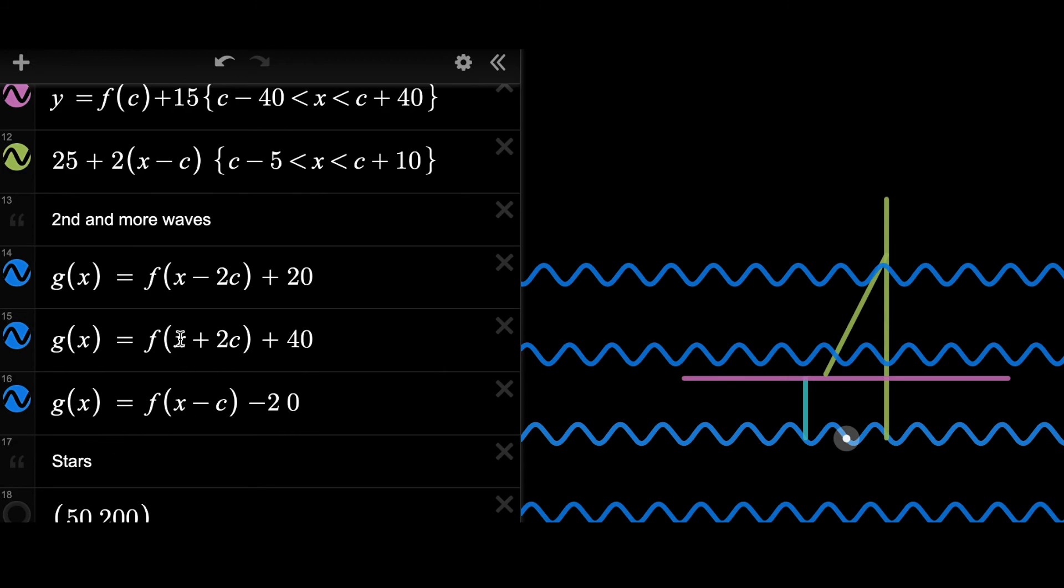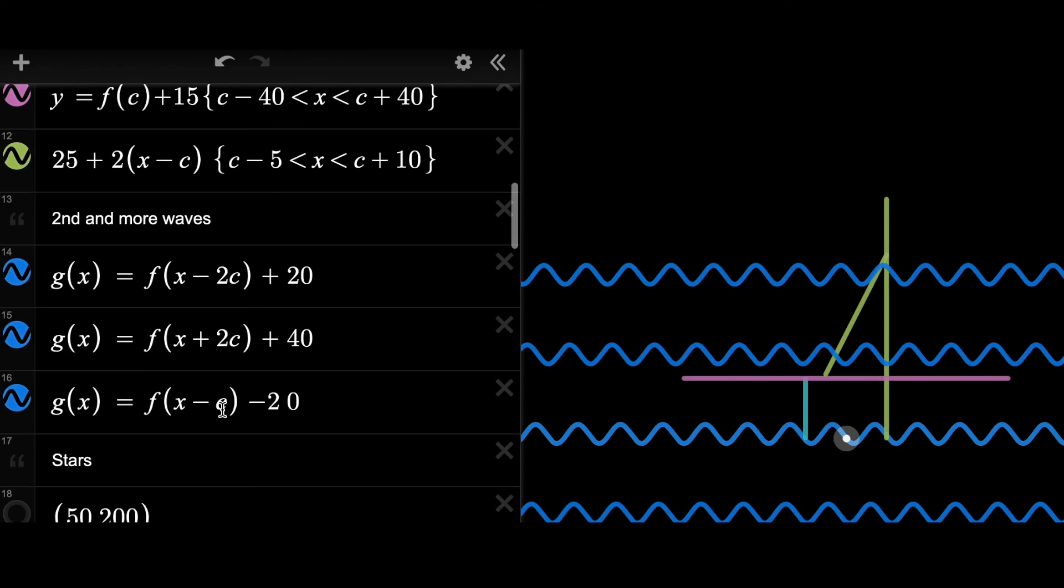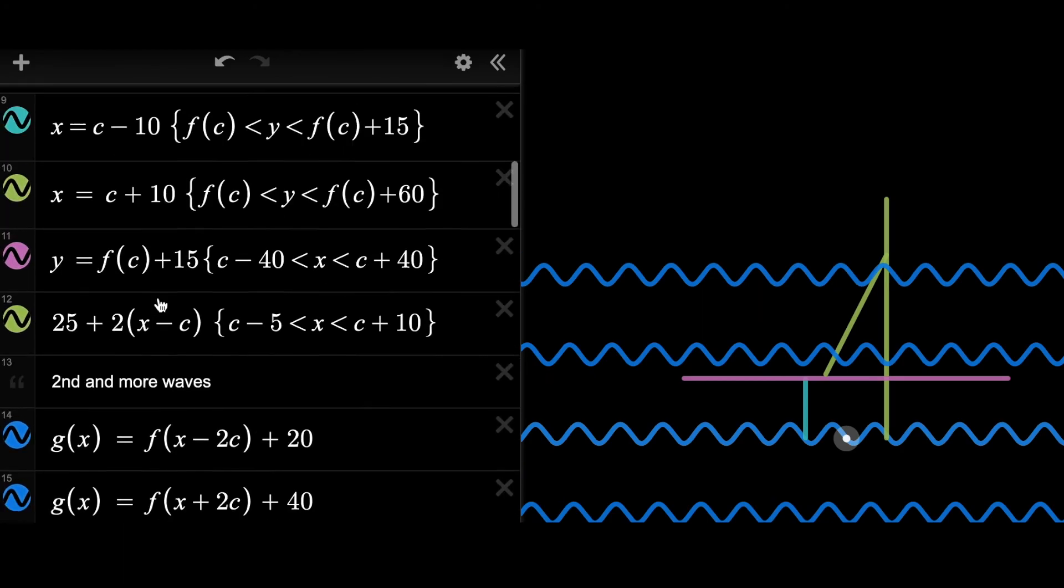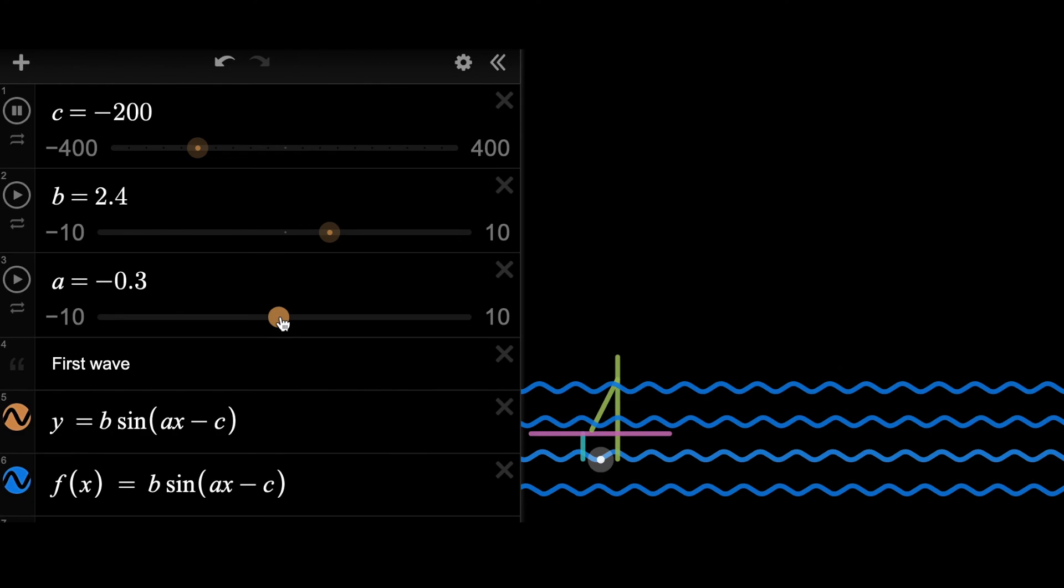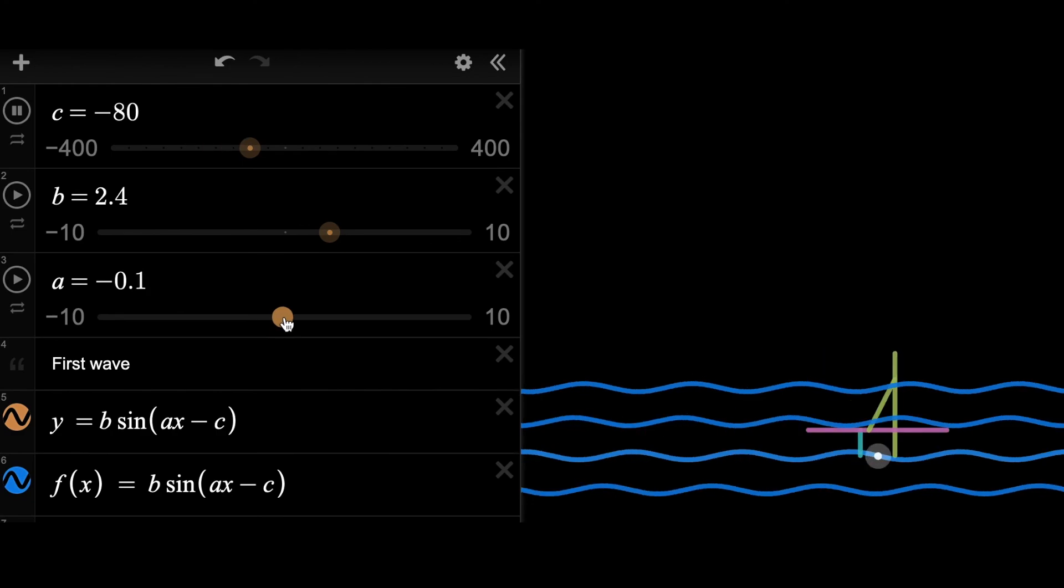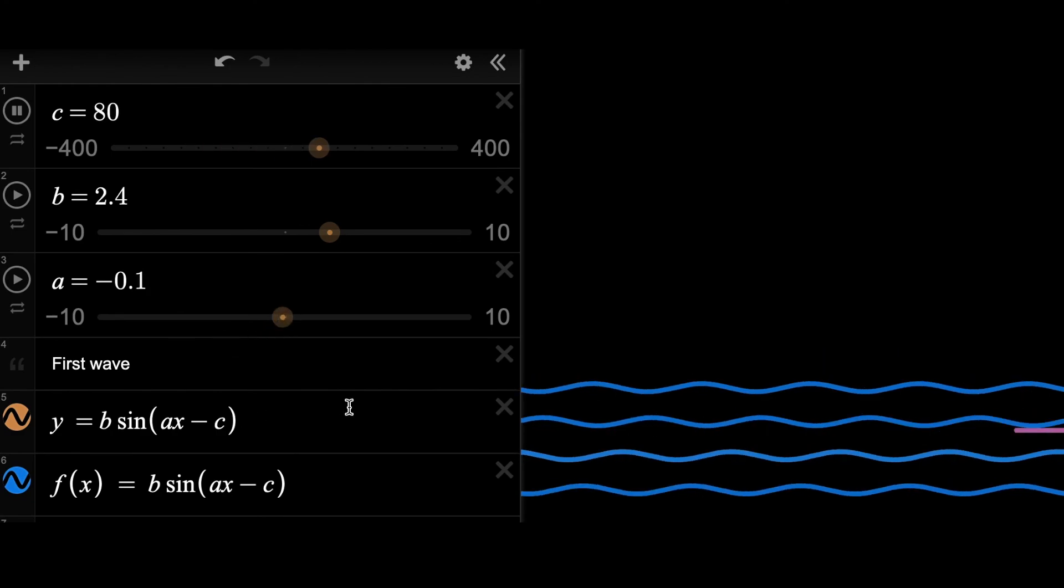Also, I alternate the speed of each of the waves by adding or subtracting a multiple of c to the value of x. Again, this is another linear transformation. Now you can see that the boat is moving along with the waves.